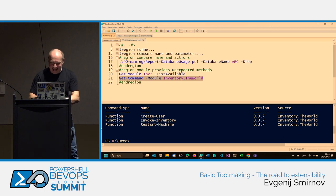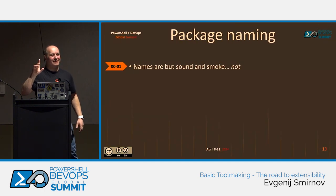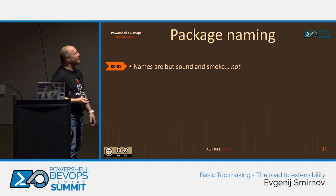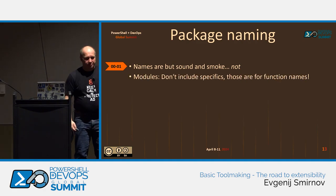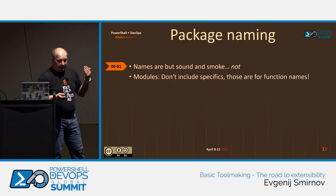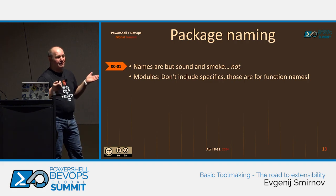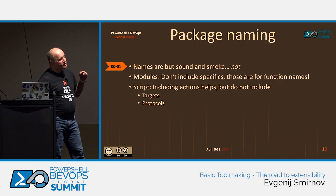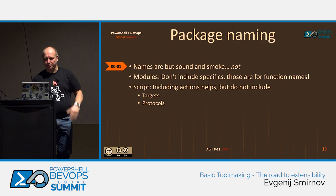Think about it — naming is important. Modules are brands and rebranding is expensive. Modules should not include specifics in their name, because specifics can be provided in the names and arguments of the cmdlets that the modules export. James spoke about a module called Gumshoe and everybody knew what that was about. Scripts could include actions in the names — this is actually quite helpful. But the other two dimensions, targets and protocols, should not be part of the name of the script.